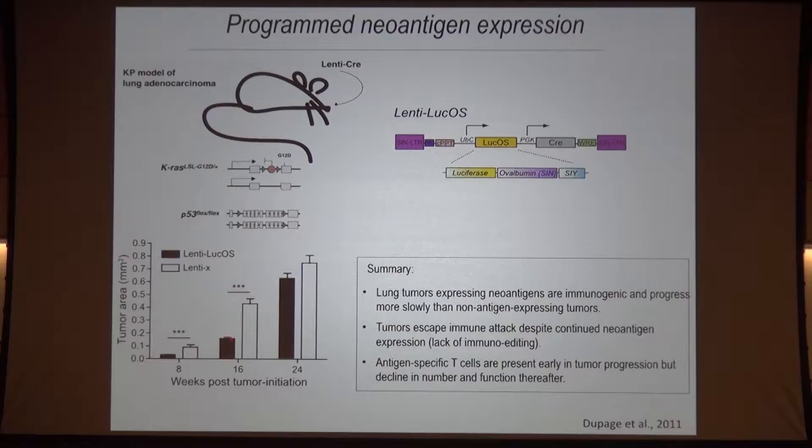The bad news is that it doesn't last. This immune suppression is true at eight weeks and at sixteen weeks, but not true at twenty-four weeks, where you can see that the antigen-expressing tumors have caught up.